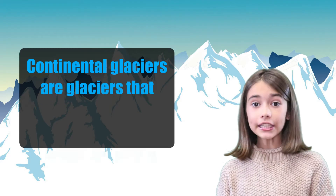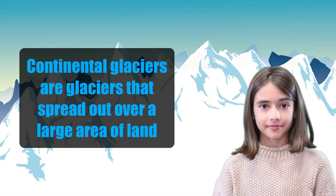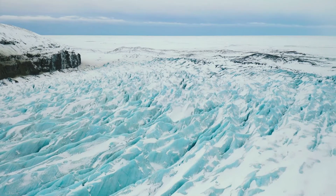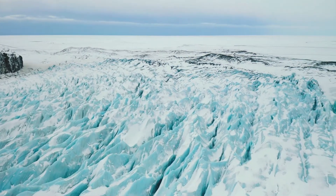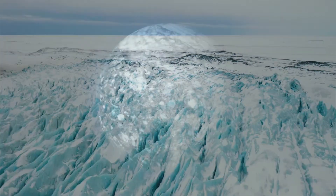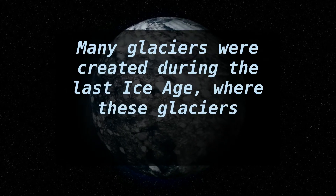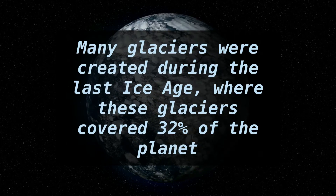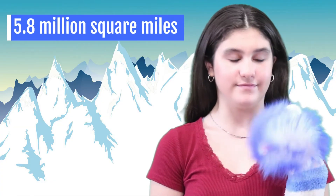Continental glaciers are glaciers that spread out over a large area of land. Some continental glaciers can still be found in Greenland and Antarctica. Many glaciers were created during the last Ice Age, where these glaciers covered 32% of our planet Earth. Now glaciers cover about 10% of the Earth's surface, which is still over 5.8 million square miles. That's still pretty big!